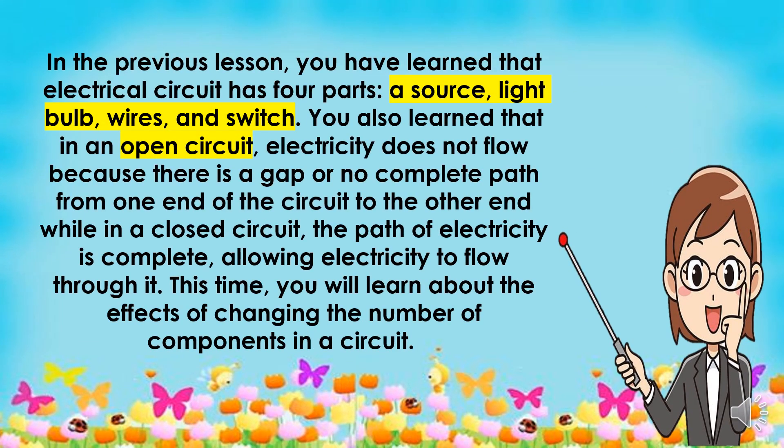In the previous lesson, you have learned that an electrical circuit has four parts: a source, light bulb, wires, and switch. You also learned that in an open circuit, electricity does not flow because there is a gap or no complete path from one end of the circuit to the other end. While in a closed circuit, the path of electricity is complete, allowing electricity to flow through it. This time, you will learn about the effects of changing the number of components in a circuit.